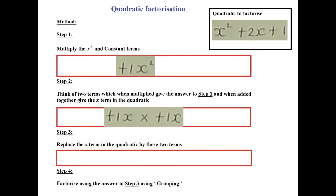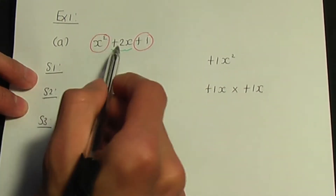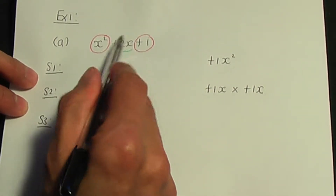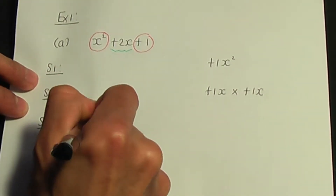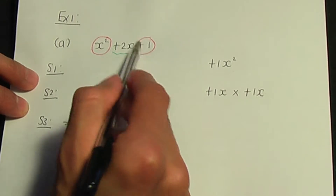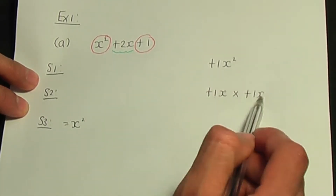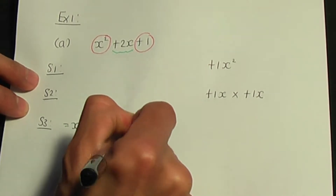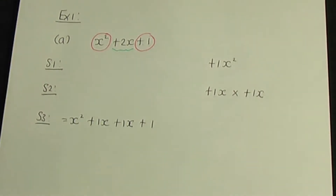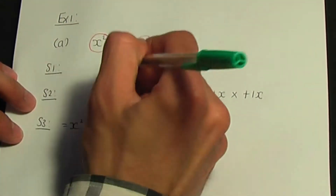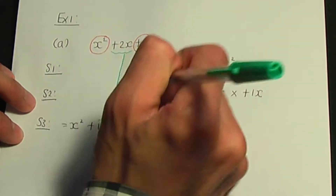Step number 3 is to replace the x term in the quadratic by the two terms we thought about. I keep the x squared as is, replace the x term 2x by the two terms plus 1x and plus 1x, keeping the plus 1 at the end. So we've replaced that term by the two terms we thought about.